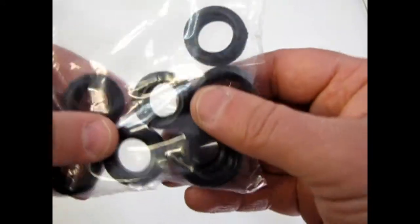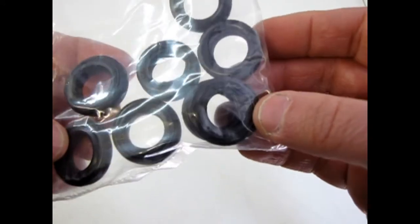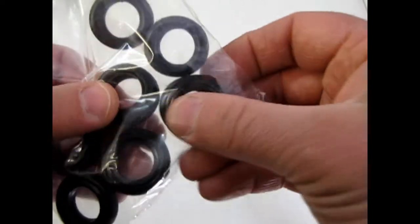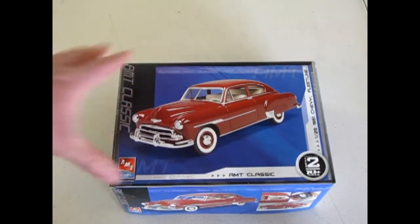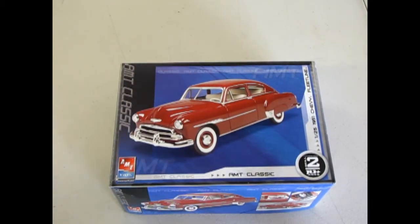And last but not least, we have our tires. And they give you again the Goodyear and the Firestone tires. And that brings us to the conclusion of what's in the box for our AMT 51 Chevy Fleetline.